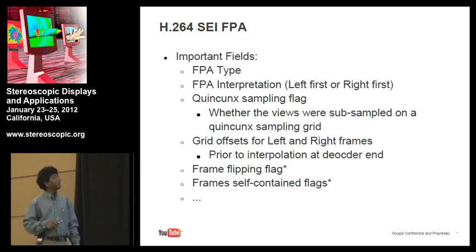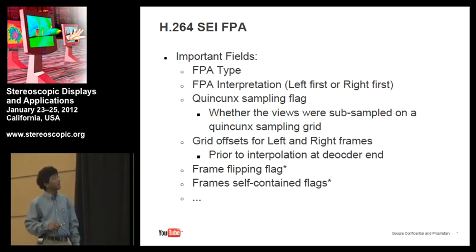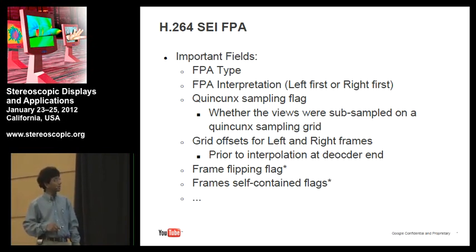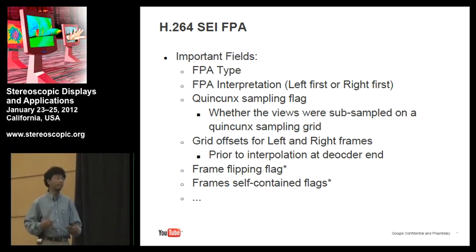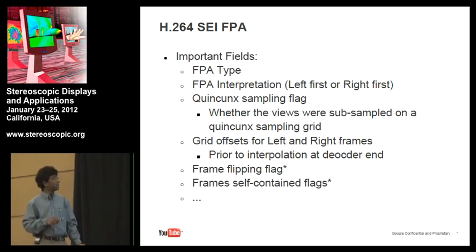The important fields in SEI FPA are: FPA type, which is side-by-side, top-bottom, frame alternate, and so on; frame FPA interpretation, which is whether left field comes first or right view comes first; a quincunx sampling flag; and grid offsets that you can specify in one-sixteenth pixel accuracy. At the time, I decided to use only these four because these are apparently the most important ones in terms of the fidelity of the decoder being able to decode and interpolate the frames correctly. So YouTube supports these four fields.